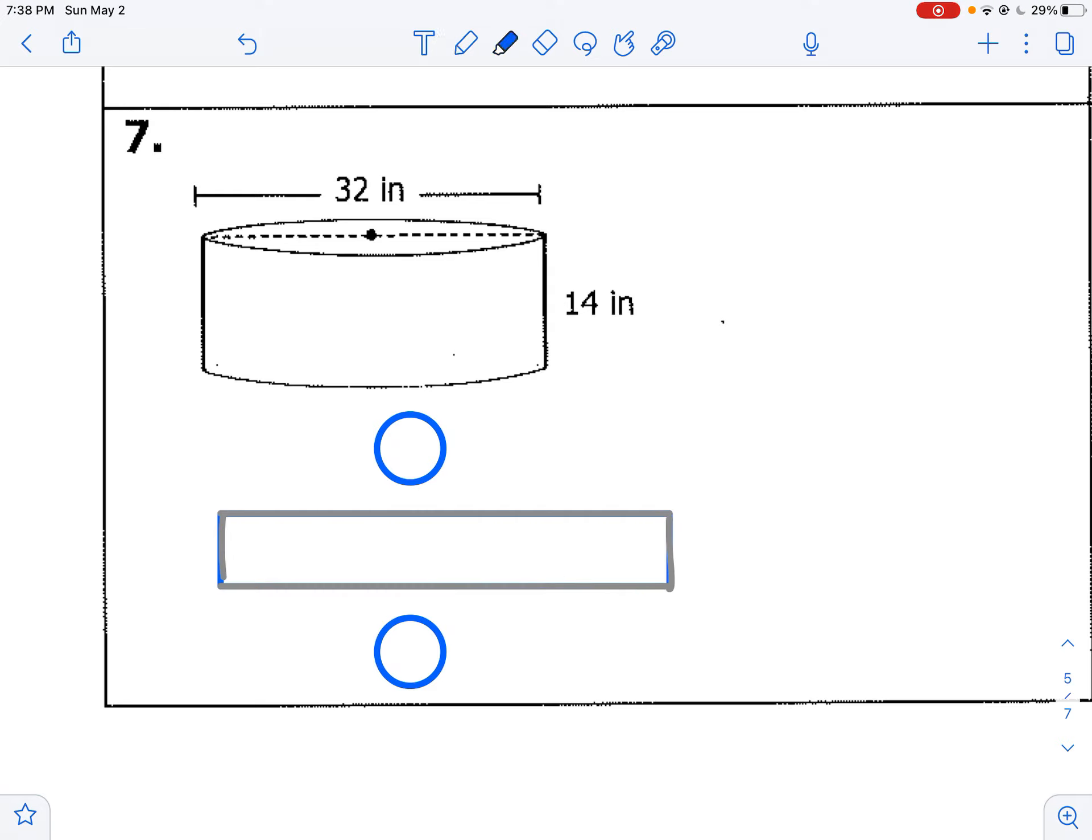So to find our surface area, let's find the area of the two flat surfaces on the top and on the bottom. And to do that, we need our radius. So the diameter is 32. The radius is 16.